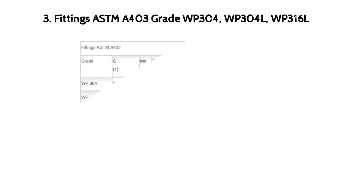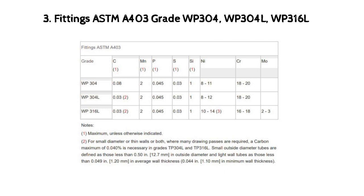Table 3: Fittings — ASTM A403, Grades WP304, WP304L, WP316L. Notes: for small diameter or thin walls or both, where many drawing passes are required, a carbon maximum of 0.040 is applied in Grades TP304L and TP316L. Small outside diameter tubes are defined as those less than 0.50 in (12.7 mm) in outside diameter, and light wall tubes as those less than 0.049 in (1.20 mm) in average wall thickness, or 0.044 in (1.10 mm) in minimum wall thickness. On pierced tubing, the nickel may be 11.0–16.0 percent.